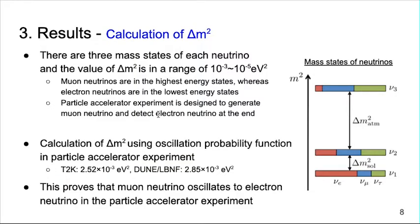Second, as shown in the figure on the right, neutrinos have three mass states which the neutrinos are distributed in. In general, it is known that muon neutrinos have a high probability of being in the highest mass state whereas electron neutrinos have a high probability of being in the lowest mass state.